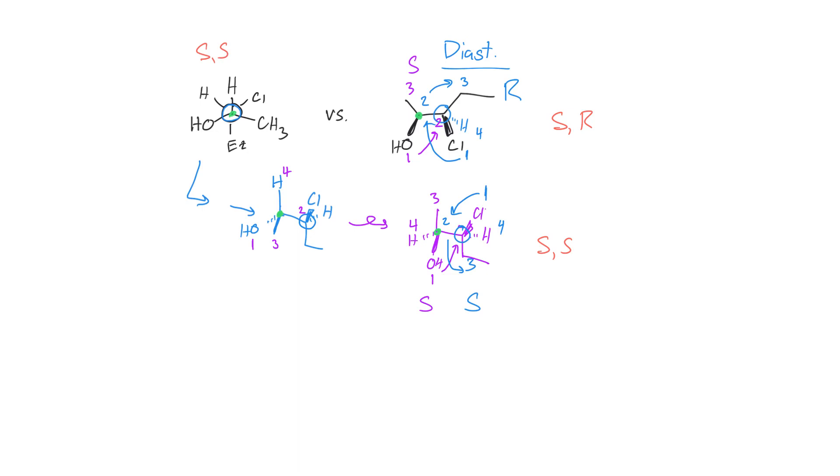So having this Newman projection makes it a bit more challenging, of course. But it's still solvable. And because we have flipped one, but not all, of our stereocenters, diastereomers is the correct analysis here for this pair of compounds.